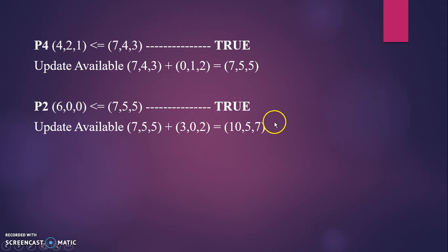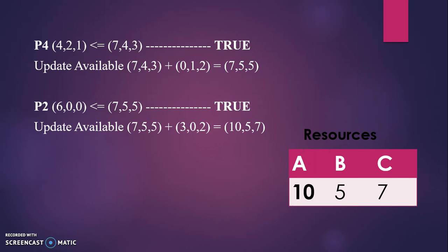If you notice, the final answer is equal to our total instance timetable, which is resources: A is 10, correct; B is 5, correct; C is 7, correct.